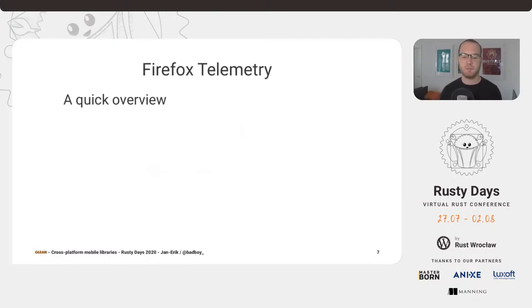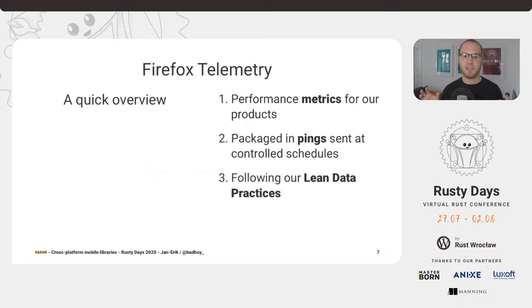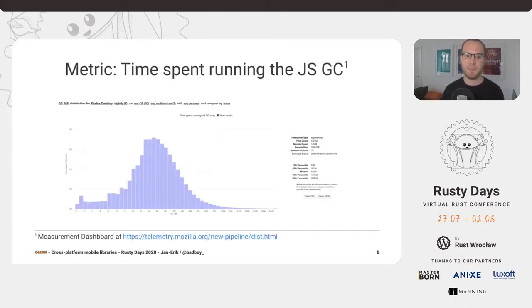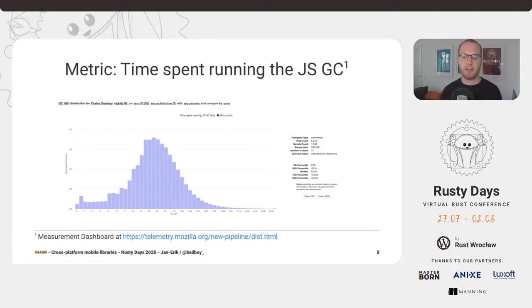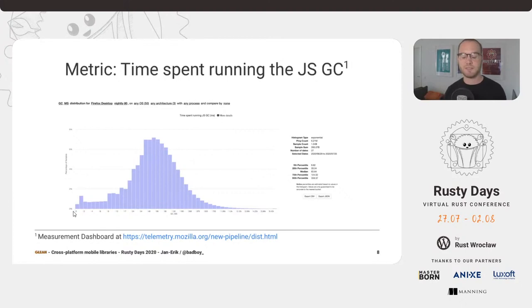So let's talk about Firefox telemetry. What is that? Firefox does collect data about how it's used. We collect performance metrics for the product that is Firefox desktop. We then bundle up these metrics into what we call pings — essentially a bundle of all these metrics that we can send out as one big thing. When doing this, we follow what we call the lean data practices. This shows the graph of one of the metrics we collect: the time spent running the JavaScript garbage collector.